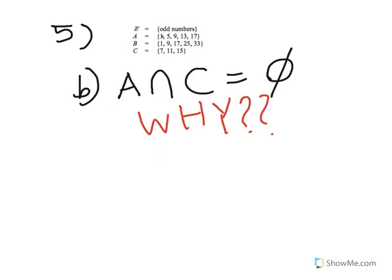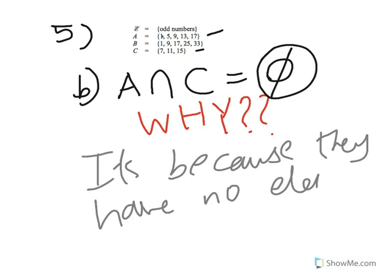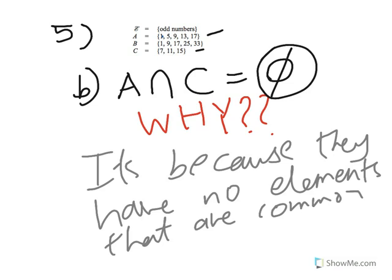For question 5B, they ask why A intersect C equals the empty set — that symbol is a Greek symbol meaning nothing. The reason A intersect C equals the empty set is simply because when you look at both sets A and C, they have no elements in common.